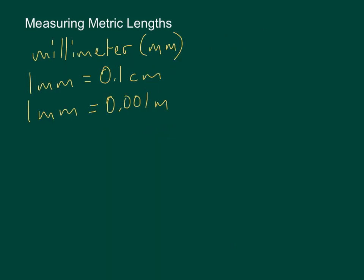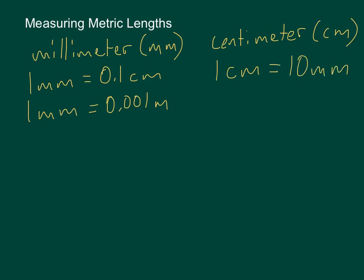Now let's look at centimeters. Centimeter is abbreviated CM. 1 centimeter is the same thing as 10 millimeters, which we've already talked about. But 1 centimeter in terms of meters is the same thing as 1 hundredth of a meter. There are 100 centimeters in a meter, so if we divided a meter into 100 pieces, each piece would be 1 centimeter — therefore 1 centimeter is 1 one-hundredth of a meter.